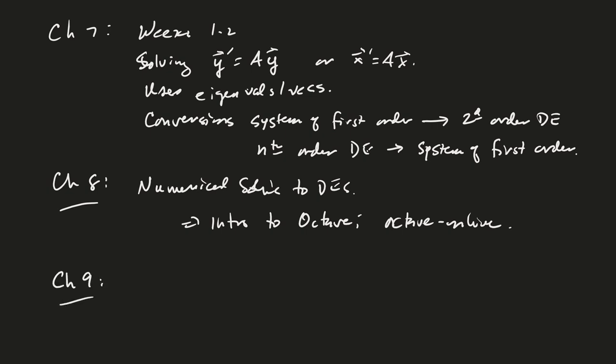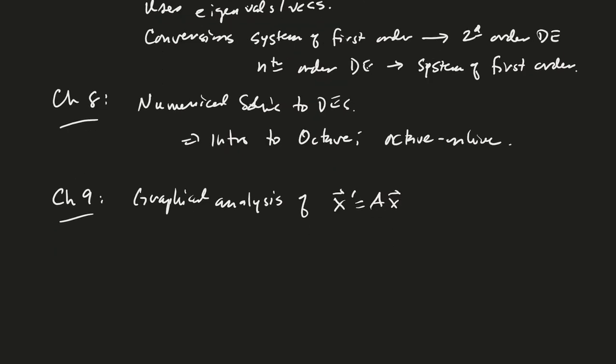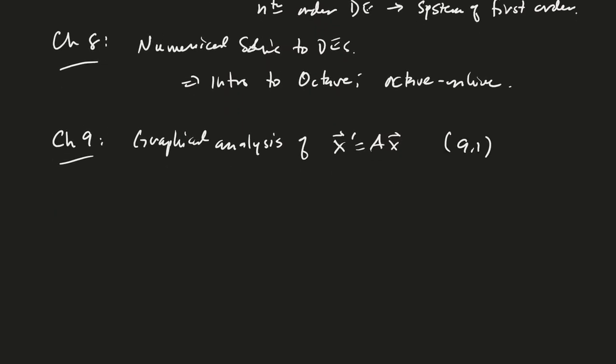we're going to be taking a look first at graphical analysis of, I guess we could say, x prime equals ax. And this is 9.1. And then we're going to talk about linearization of the more generic differential equation, x prime equals f, that's a vector-valued function of tx, and that'll be 9.3.